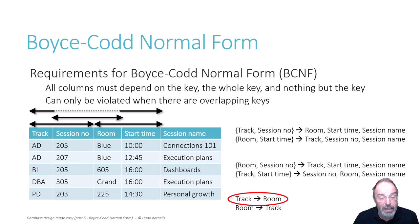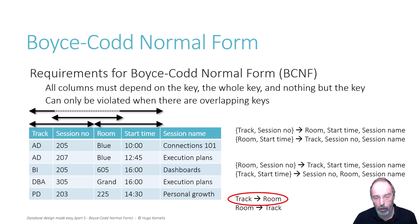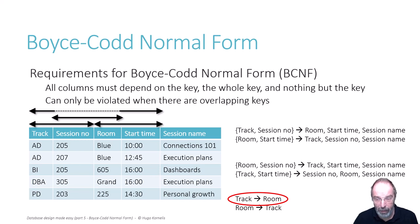And in this case, there is a BCNF violation. The dependency track determines room means that one column, room, is dependent on a single other column, track. For third normal form, that's not a problem because room is a key column. In Boyce-Codd Normal Form, that doesn't matter. Room is a column and it cannot depend on a subset of a key. But it does depend on a subset of a key. So BCNF is violated.